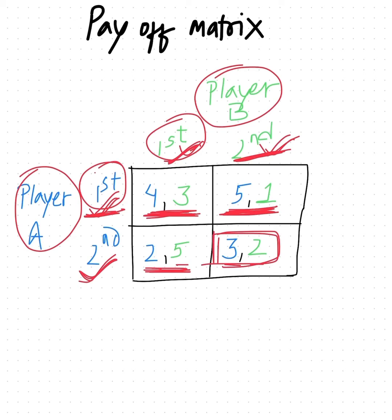Finally, 3, 2 is the result when Player A selects the second strategy and Player B also selects the second strategy.